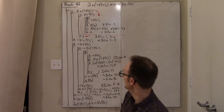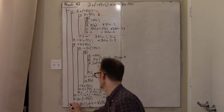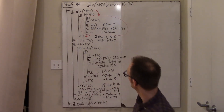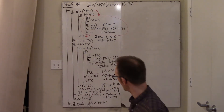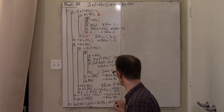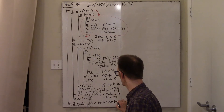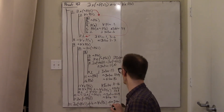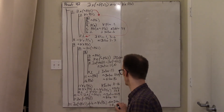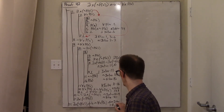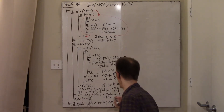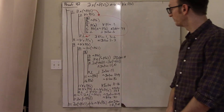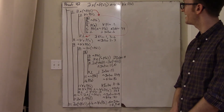Thus by negation intro — lines eleven through fourteen — I conclude not not P(a), giving P(a). Then universal intro lines eleven through sixteen gives everyone is pretty: ∀x P(x). And intro with line nine gives the contradiction, bottom intro follows. Then negation intro lines ten through nineteen, double negation elimination in line twenty-one, and the biconditional intro finishes proof 42 in twenty-two lines.